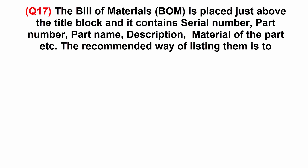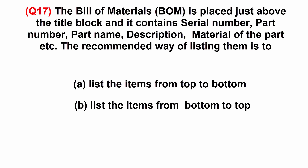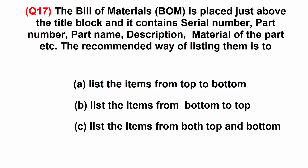The bill of materials is placed just above the title block and it contains serial number, part number, part name, description, material of the part, etc. The recommended way of listing them is to: A: list the items from top to bottom. B: list the items from bottom to top. C: list the items from both top and bottom.